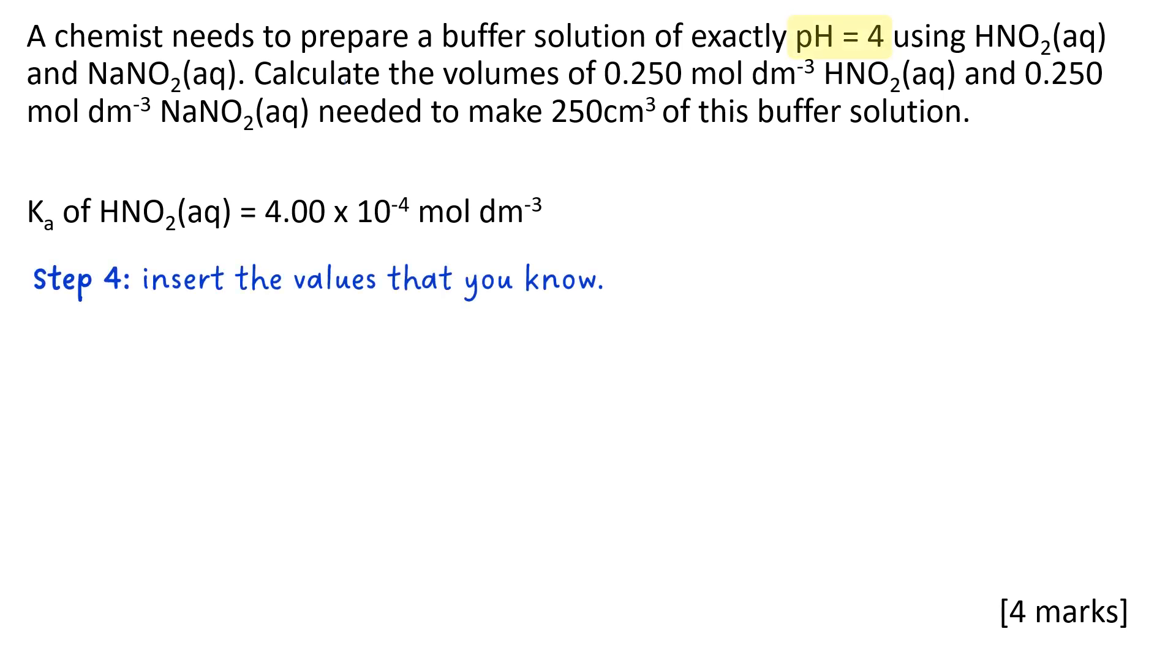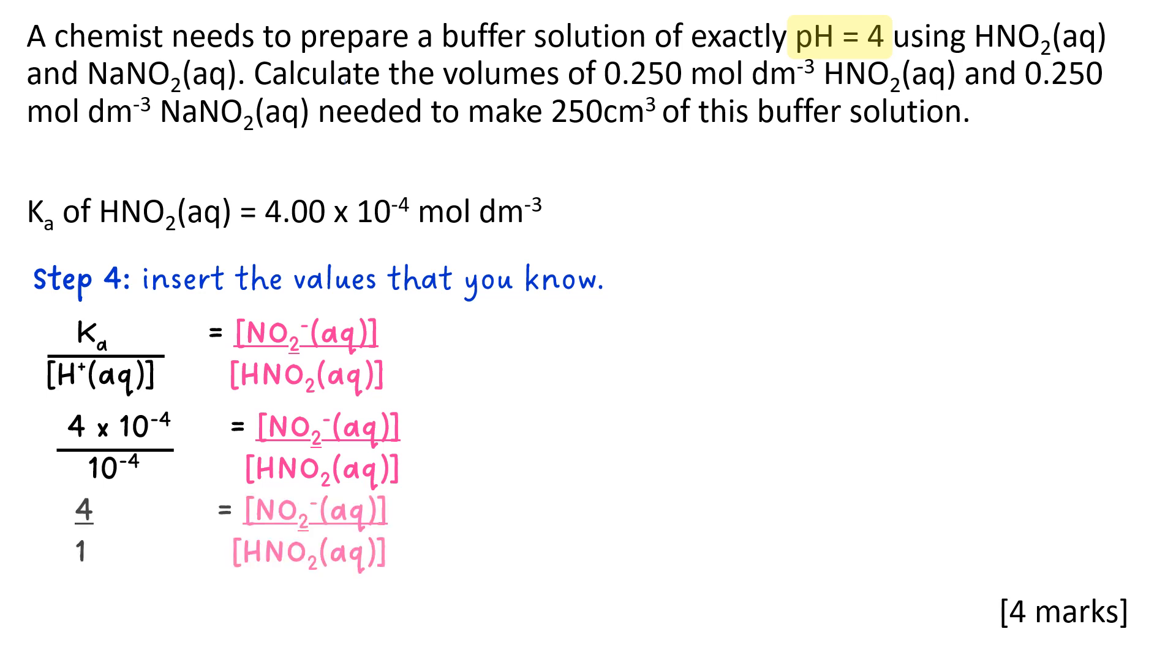So the next thing to do is to put numbers in and do the calculation. So insert the values that you know. You know that 4 times 10 to the minus 4 is your Ka value. You know that 10 to the minus 4 is going to be your H⁺ value. So 4 over 1 is the ratio you're looking for.